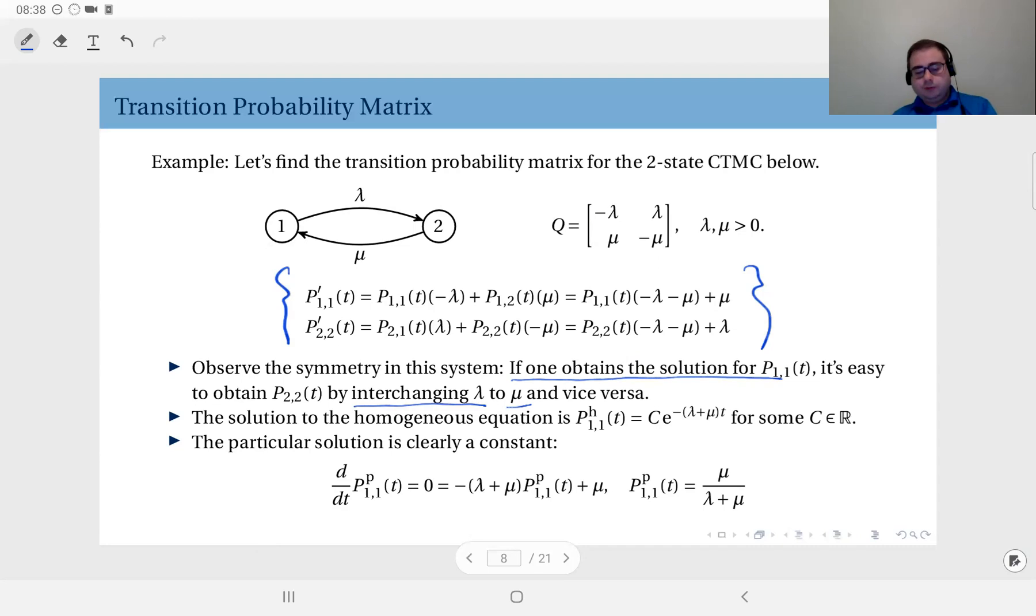So if you solve P11(t) and in that solution, if you switch lambdas to mu's and mu's to lambdas, you will get the solution for P22(t). Simple as that. So now, I don't even need to solve 2 instead of 4. Only 1 is going to be sufficient.